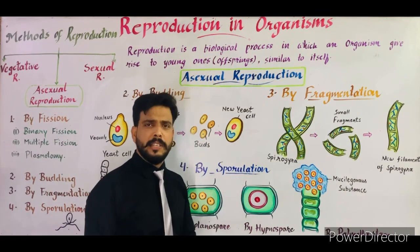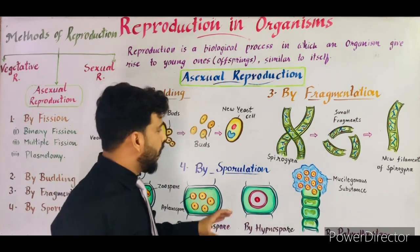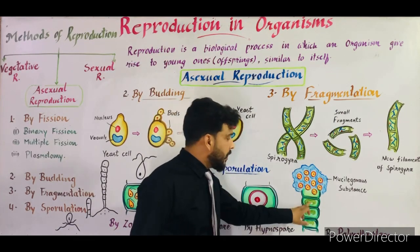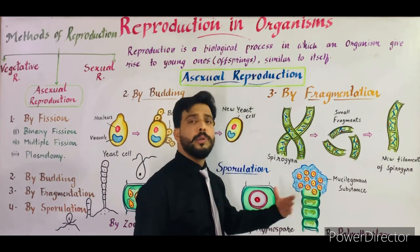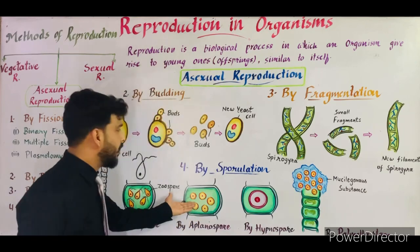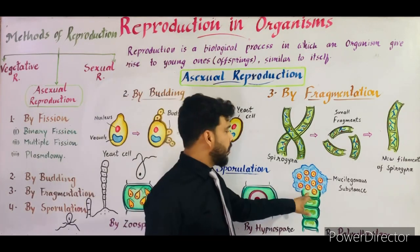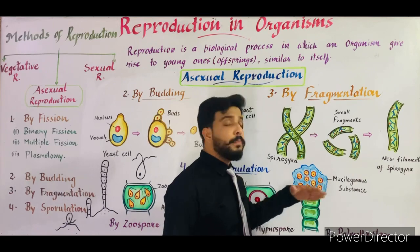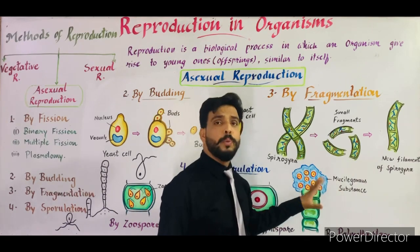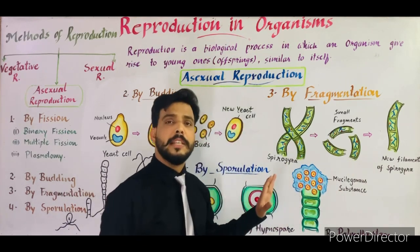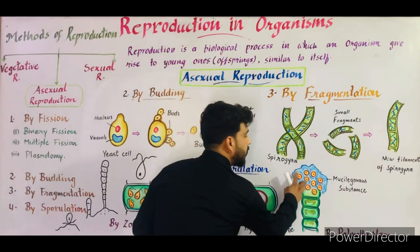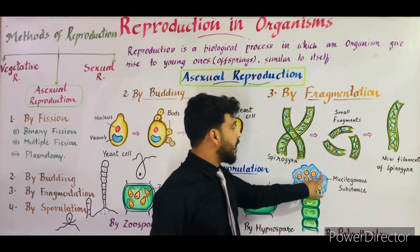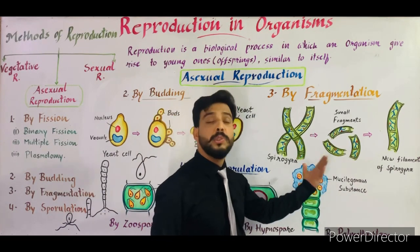The last is the palmella stage, which is a special type of stage. As you can see, the cells of Ulothrix produce numerous rounded aplanospores which come out inside the cell. A mucilaginous substance also forms inside the cell, which surrounds these spores. As you can see in the diagram, these are the spores surrounded by a mucilaginous matrix.